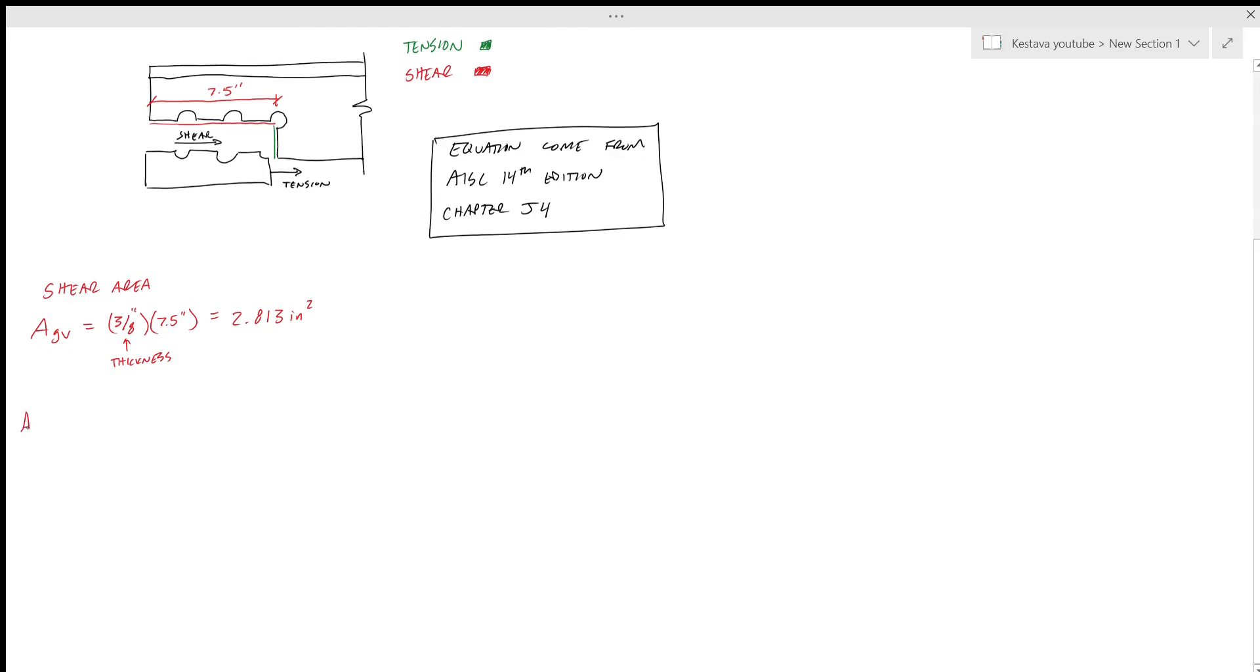Now we want to know ANV, which is the net area in shear experiencing shear forces. So that is 3/8 times seven and a half inches, that's the gross length. Now you need to subtract your bolt holes: two and a half bolt holes. Each bolt hole is the diameter of the bolt, 7/8 inch, plus 1/16 inch on each side of the bolt, so that's an extra 1/8 inch. Each bolt hole is 1/8 inch bigger than the bolt diameter specified. That gets you your net shear area: 1.875 inches squared.